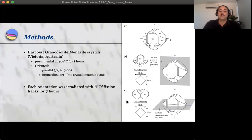Then each mount was irradiated with Californium fission tracks for about seven hours. And these were implanted about 30 degrees to these polished surfaces.